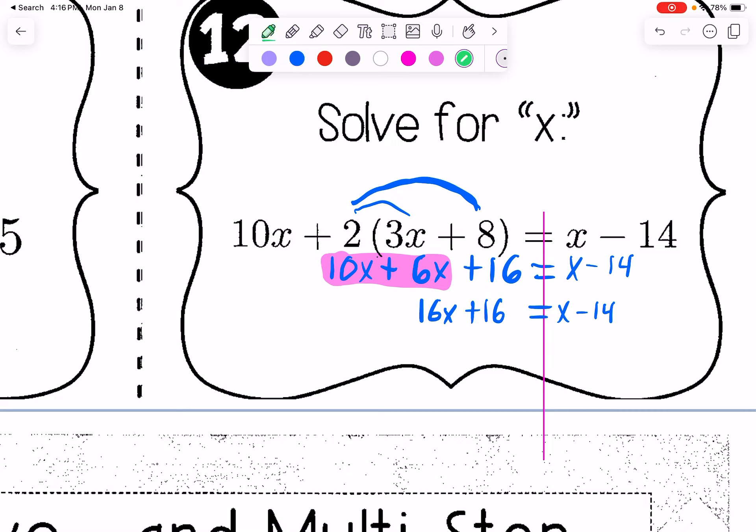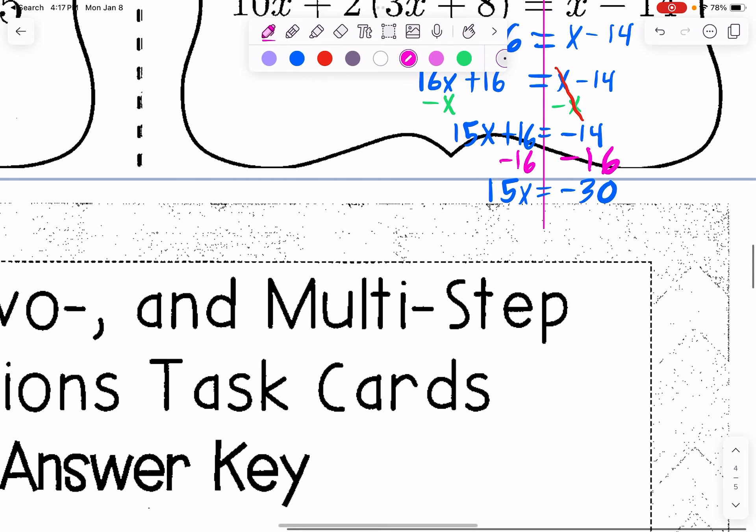Want to get all of the x terms to one side, I'll subtract x from both sides. Remember, we have to do the same thing to both sides to keep the equal sign true. To keep the equality, so we have 15x plus 16 equals negative 14. Next step is we need to get all the numbers on the opposite side of the variables. Subtract 16 on both sides. Last step, we have 15x equals negative 30. Well, that's not the last step, actually. Last step is to divide by 15 on both sides. So we get x equals negative 2.